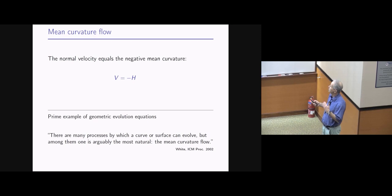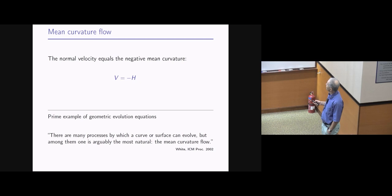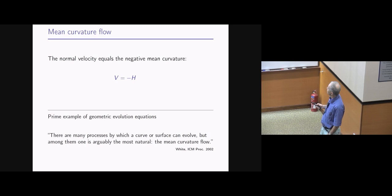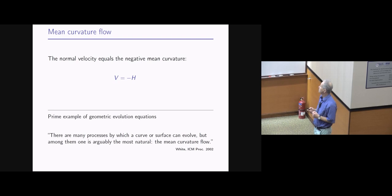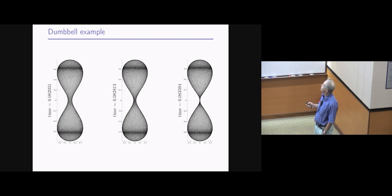This is a prime example of geometric evolution equations, just as the heat equation is a prime example of parabolic PDEs — and we will see there is some relationship there. I have a citation from a review paper by Steve White, one of the pioneers in the analysis of geometric evolution equations, who says: among all processes by which a surface can evolve, mean curvature flow is arguably the most natural.